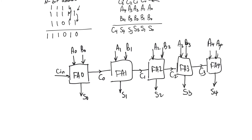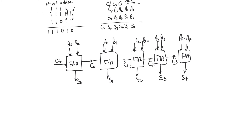Now, for the very last full adder, its own carry-out is also going to be part of the final result. So adding two 5-bit numbers is generally going to produce a 6-bit number. For arithmetic circuits, what we care about the most is speed. We do care about area and power, but speed or delay is of the utmost importance.